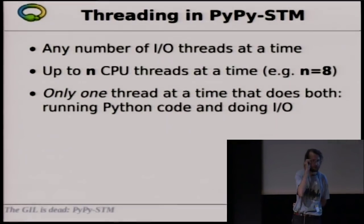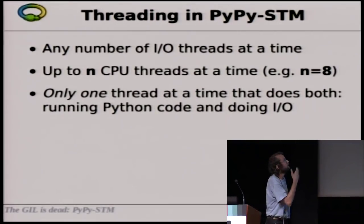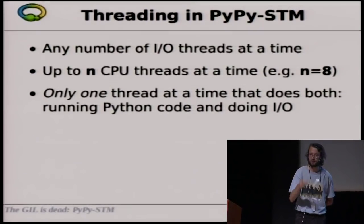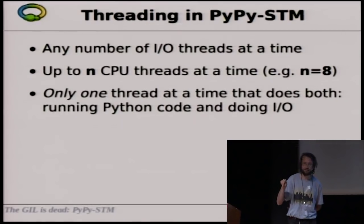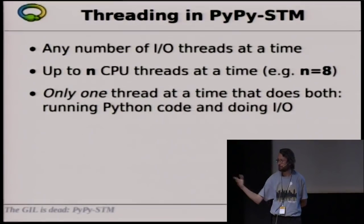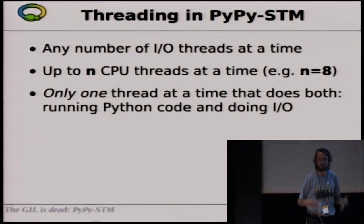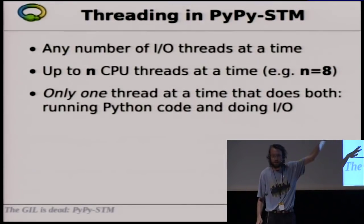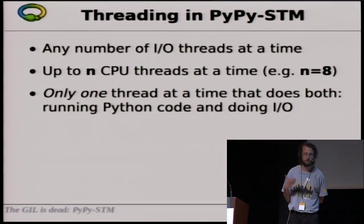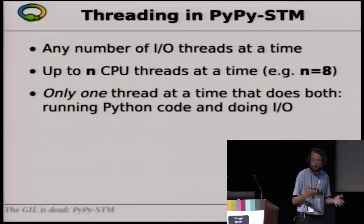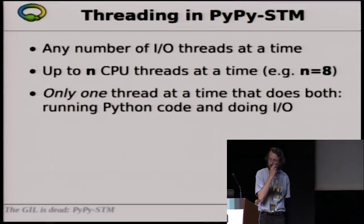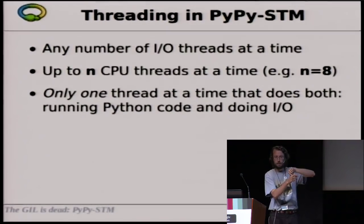If instead you're using PyPy STM, you get a slightly different result. You can have any number of input-output threads, and instead of one, you can have up to N threads doing CPU-intensive things, where N is compiled into PyPy STM. Here I'm using PyPy STM with N equal to 4, but you can have one with N equal to 8. Typically you will get one with N equal to the number of cores on your machine.